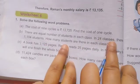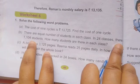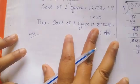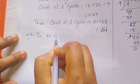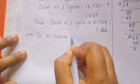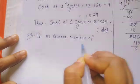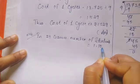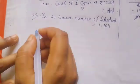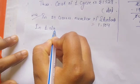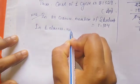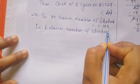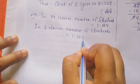First we write: In 24 classes, number of students equals 1,104. Then in 1 class, number of students equals 1,104 divided by 24.